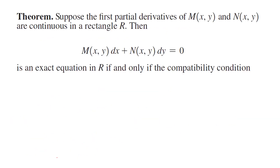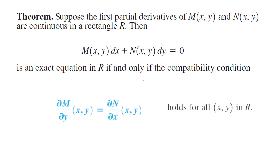We have a theorem: Suppose the first partial derivatives of M and N are continuous on a rectangle R. Then the differential equation is exact in R if and only if the partial derivative of M with respect to y equals the partial derivative of N with respect to x. If this condition is met, then you have an exact differential equation.